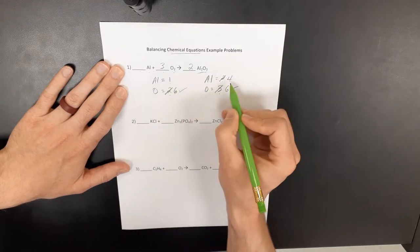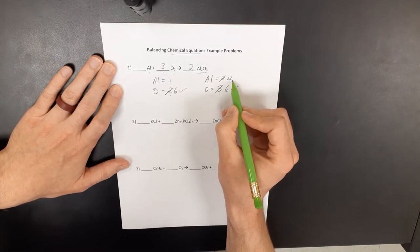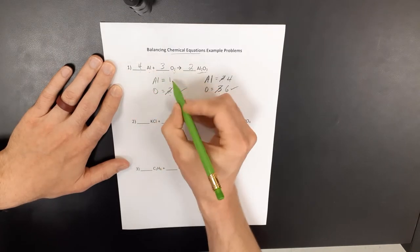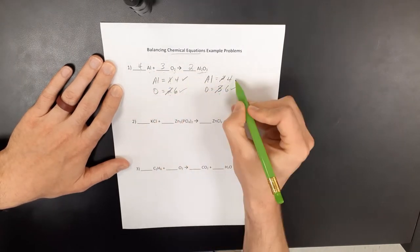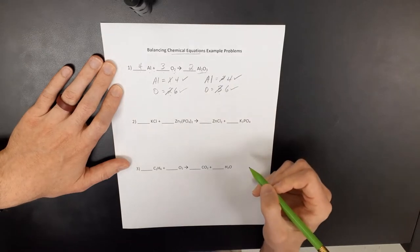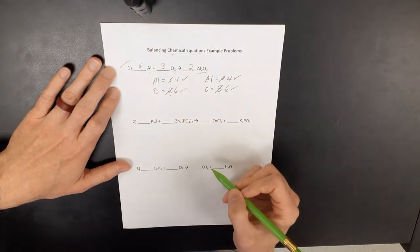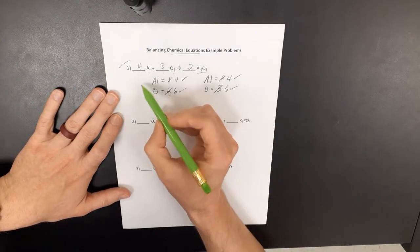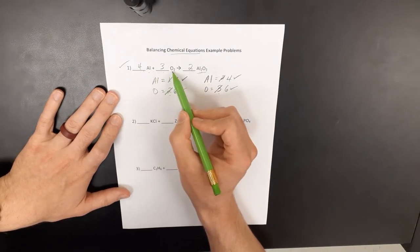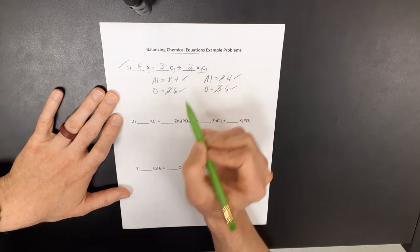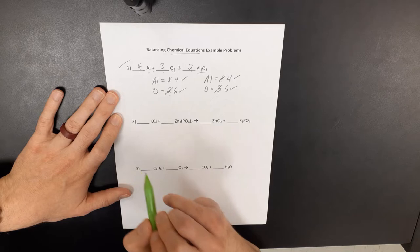Now I have two times two is four aluminum atoms. So right now I have six oxygens on both sides. I need to now fix the number of aluminum atoms. I have four on the right. So now I need four times one to give me four aluminum atoms on the left side of my equation as well. And that one is balanced. So now this is saying four aluminum atoms plus three oxygen molecules is going to yield two molecules of aluminum oxide.